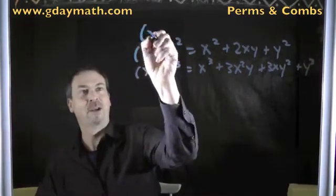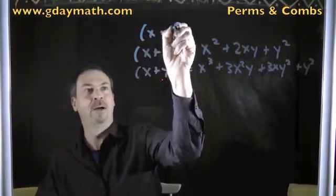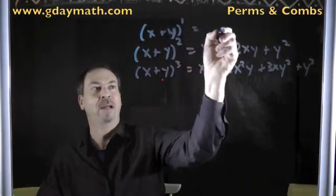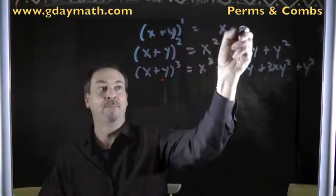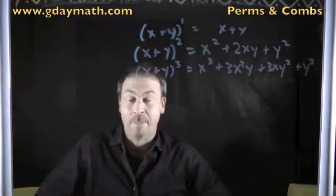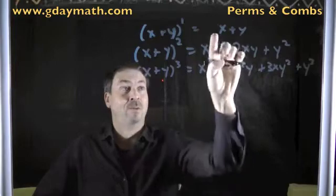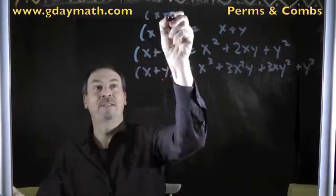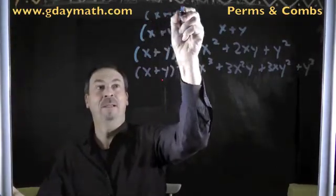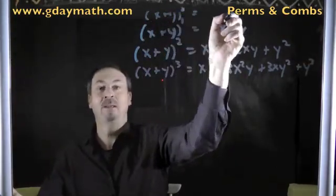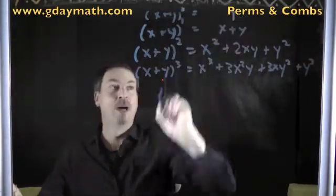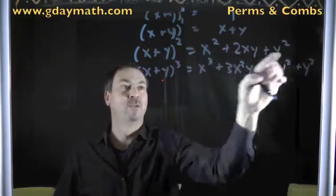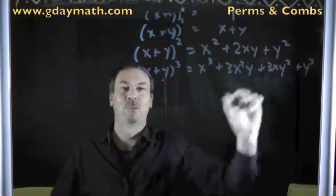In fact, if I keep going and go back a power: x plus y to the 1st power gives just x plus y, so the coefficients are 1, 1. Or x plus y to the 0th power is just 1 — anything to the 0 is 1. So we have 1; then 1, 1; then 1, 2, 1; then 1, 3, 3, 1.